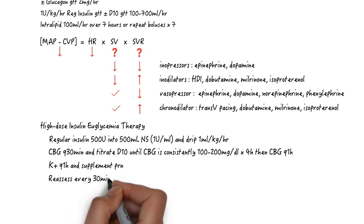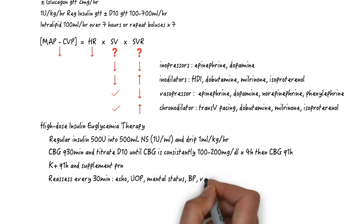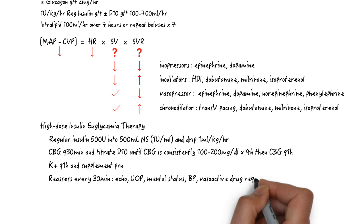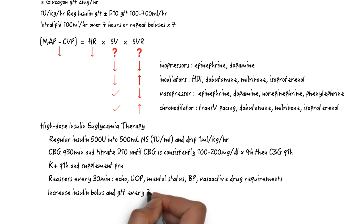After starting high-dose insulin, reassess with bedside echo every 30 minutes. This is how long it takes for the therapy to take effect. There's usually not an improvement in heart rate or even blood pressure. Monitor instead the ejection fraction, urine output, mental status, and your pressor requirements. Follow up with your toxicologist thereafter, but it usually involves increasing insulin boluses and drip rates every 30 minutes until effect.